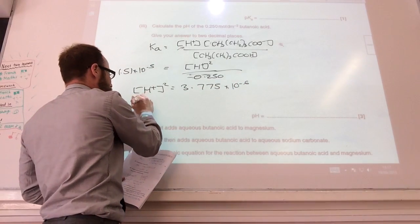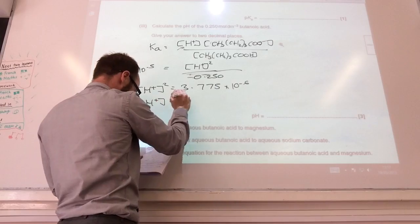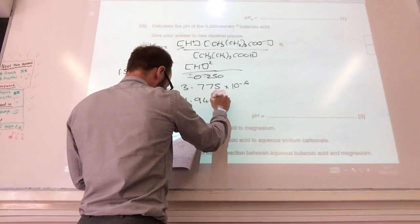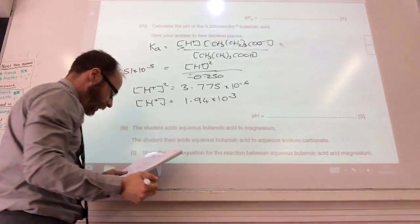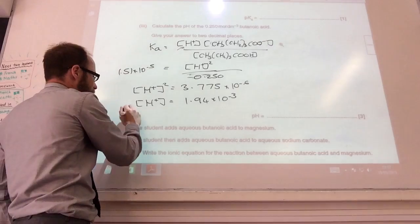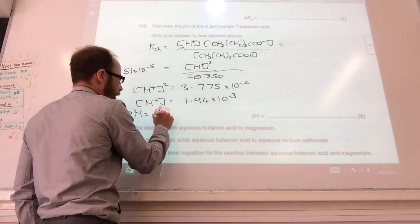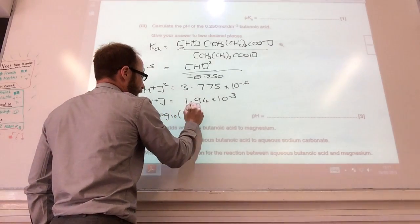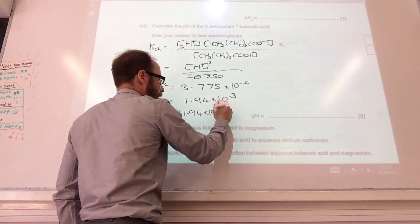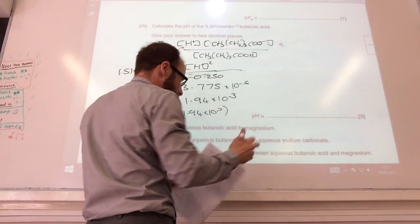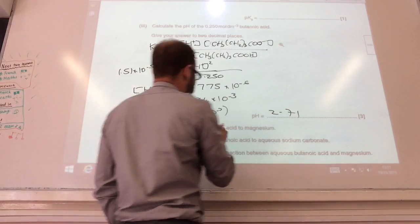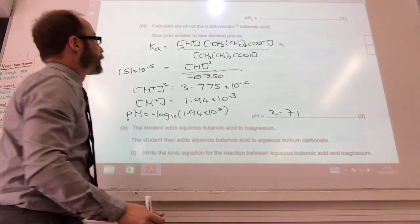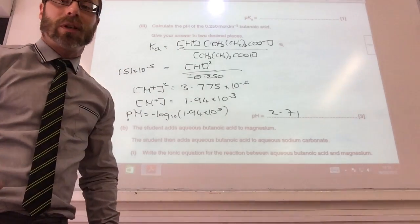You then will end up as H+ concentration of H+ squared equal to 3.775 times 10 to the minus 6. You square root that concentration of H+ is 1.94 times 10 to the minus 3. So you then plug in your pH. pH is equal to minus log to the base 10 of that number. And you should end up at being 2.71. Notice they've asked for it to two decimal places, which I've done.